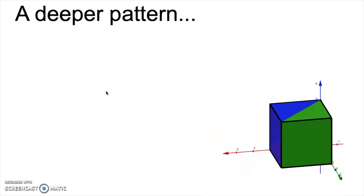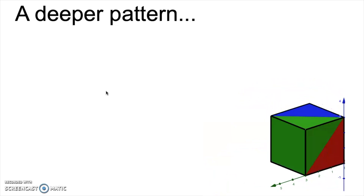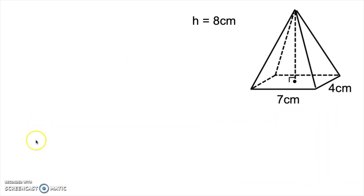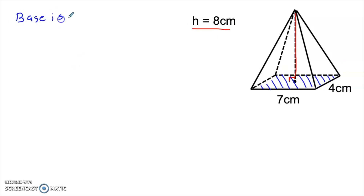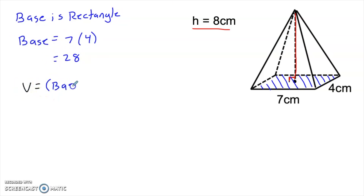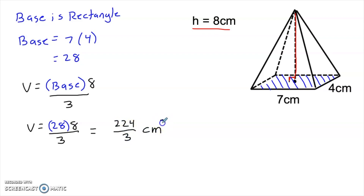I want to show you a few examples where we calculate the volume of some pointy objects. Here we have a pyramid because we started with a rectangle and stacked it smaller and smaller to a point. The height of this pyramid is 8 — that means the height straight up and down, always at a right angle. The Big B base is a rectangle, so it's simply 7 times 4, or 28. The volume of any pointy object is Big B base times height over 3, which in this case is 28 times 8 divided by 3, or 224/3 cubic centimeters.